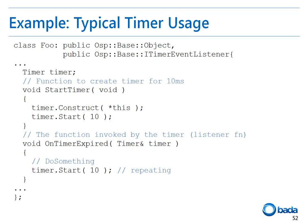This function constructs the timer, adds the listener, and then calls the start function. For this start function, the timeout parameter has been set to 10 so that the onTimerExpired function is called after 10 ms. The onTimerExpired function performs the desired operation and then restarts the timer operation so that the onTimerExpired function will be called again.